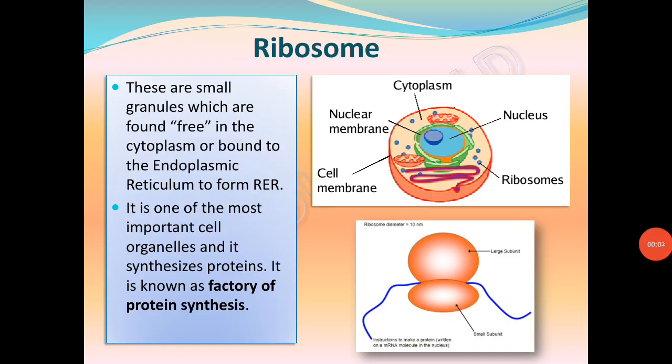Ribosomes are small granules found free in the cytoplasm or bound to the endoplasmic reticulum forming RER. They are one of the most important cell organelles as they synthesize proteins — known as the factory of protein synthesis. Ribosomes contain two subunits: a large subunit and a small subunit. When the cell needs to make protein, mRNA (messenger RNA) is created in the nucleus; the two subunits combine with the mRNA, lock onto it, and start protein synthesis.